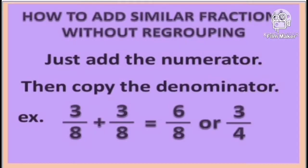How to add similar fractions without reducing? Just add the numerators, then copy the denominator. 3 eighths plus 3 eighths is equal to 6 eighths. Then reduce to the lowest term: 3 fourths.